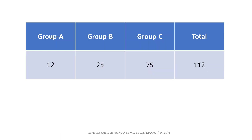Out of 112 marks, you have to attempt only 70 marks, so 42 marks are extra. That means approximately 60% extra marks are available relative to the total marks you need to attempt.